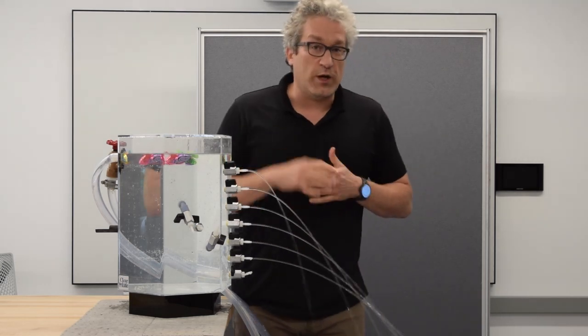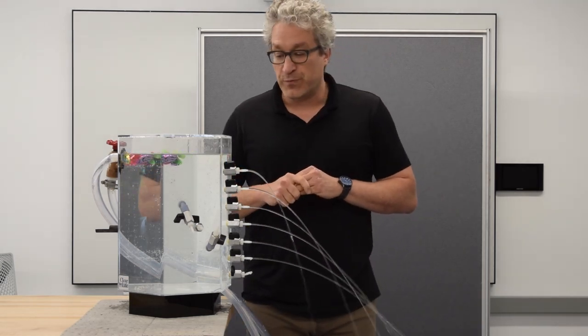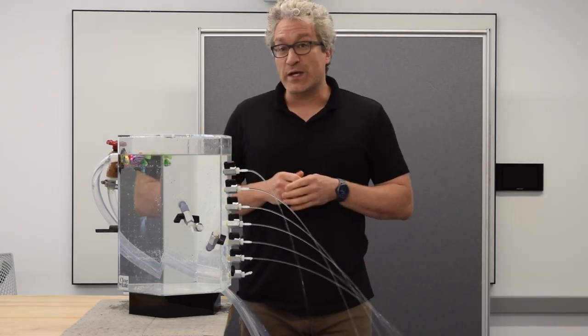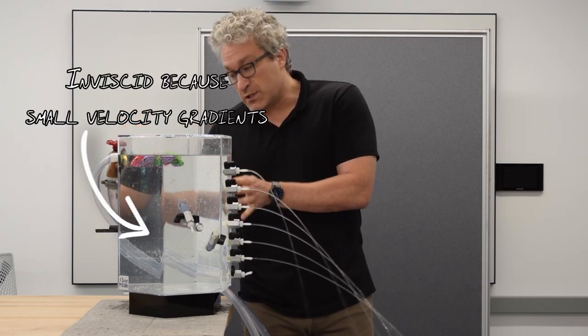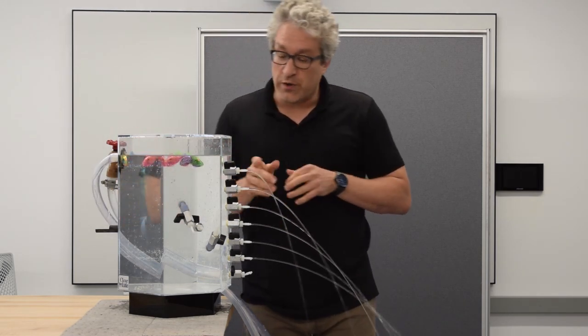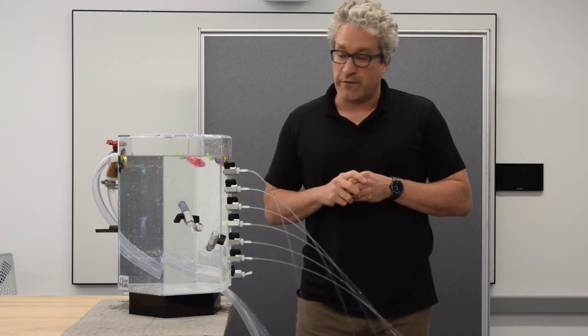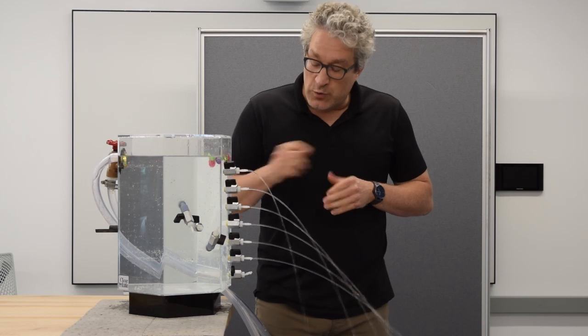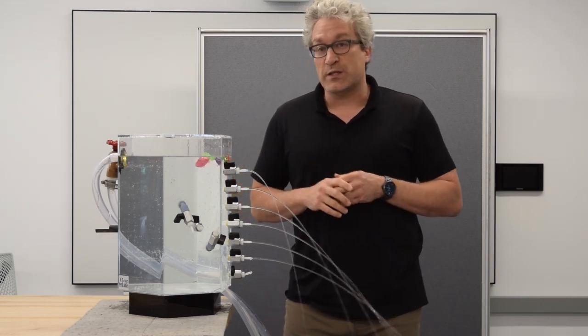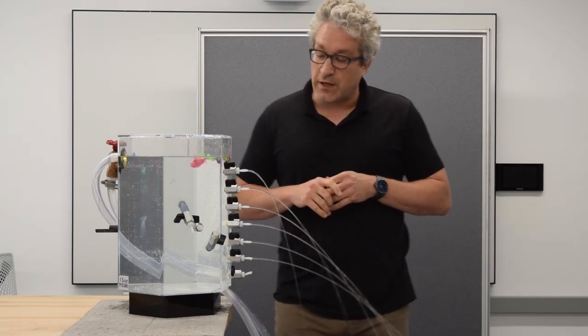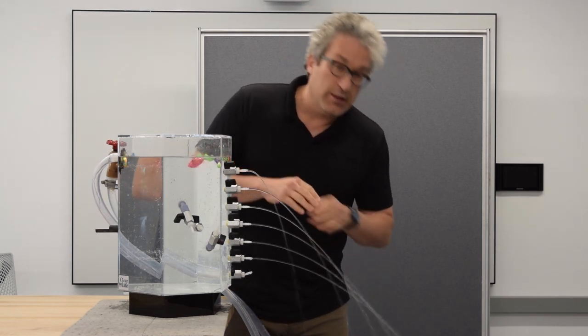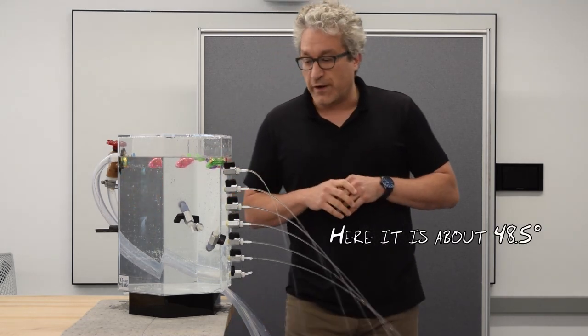These jets don't go quite as far as predicted. The reason is this flow isn't entirely inviscid. It's primarily inviscid in the tank, but when the fluid moves through these valves, there are viscous losses associated with the flow. So the speed with which it comes out ends up being a little bit slower than we would have predicted from this inviscid analysis, and this angle ends up being a little bit larger than 45 degrees.